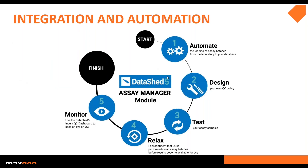Integration and automation is very important for MaxGeo. There are various processes already set up for integration and automation. MaxGeo's DataShift 5 application can be integrated with various third-party applications in order to assist the grade control geologist to capture various information sources and centralise the data for decision making and reporting. One example is our automated assay management process, where we have taken a process that previously took a lot of time from the grade control geologist and automated it. The process allows for laboratory assays to be imported automatically either from a folder on the server or from a specific email address.